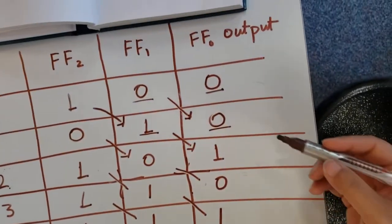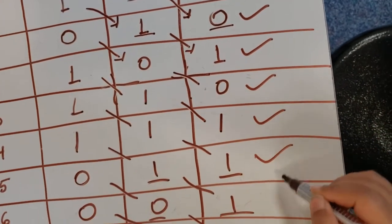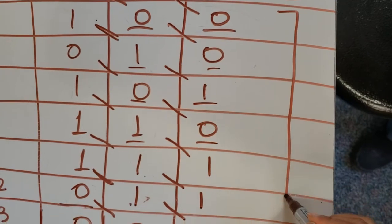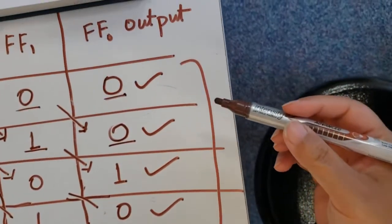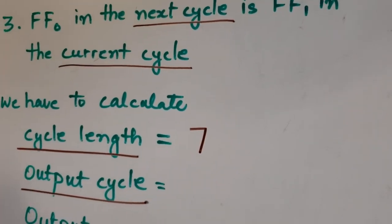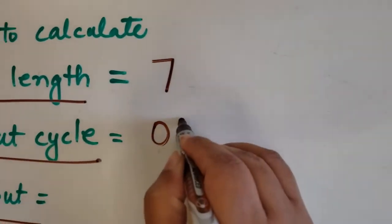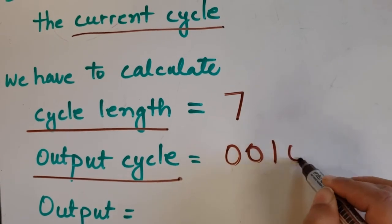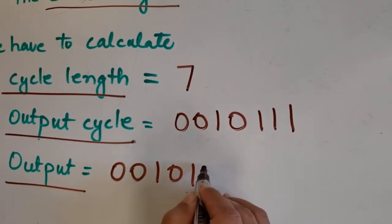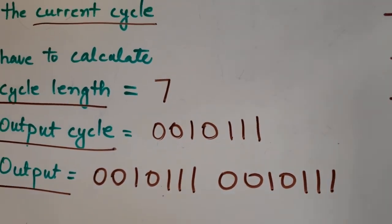Looking at the output pattern, the first seven numbers are 0, 0, 1, 0, 1, 1, 1. This pattern repeats again: 0, 0, 1, 0, 1, 1, 1. So the cycle length is 7. The output cycle is 0, 0, 1, 0, 1, 1, 1, and the total output from clock cycle 0 to 13 is 0, 0, 1, 0, 1, 1, 1, 0, 0, 1, 0, 1, 1, 1.